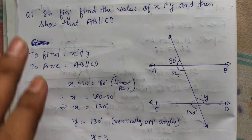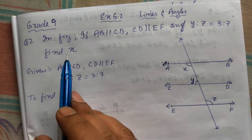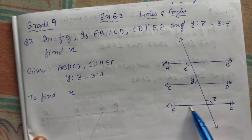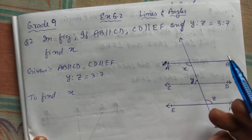Let us do question number two of exercise 6.2. In this figure, AB is parallel to CD and CD is parallel to EF. That means, all the lines are parallel.